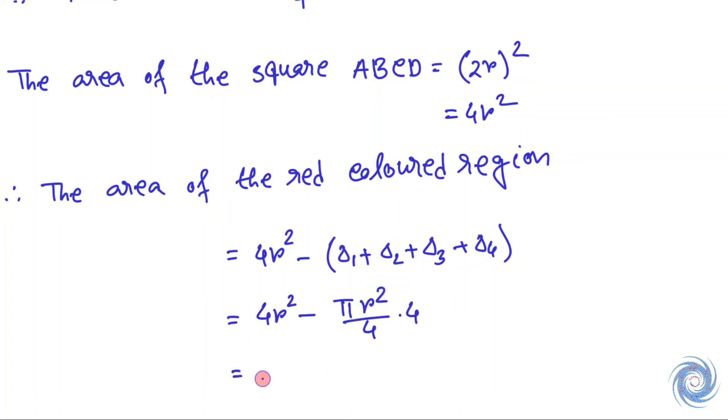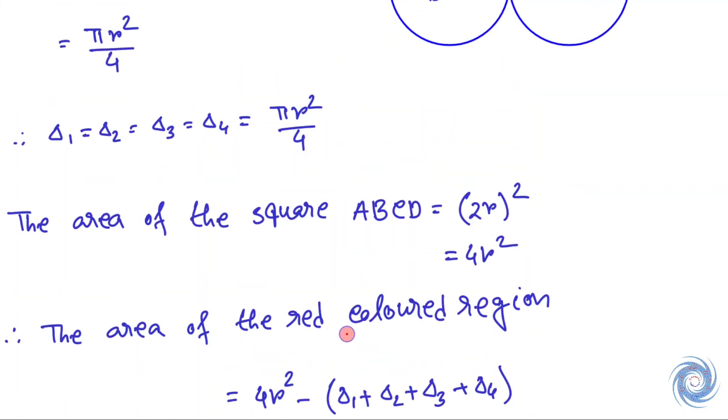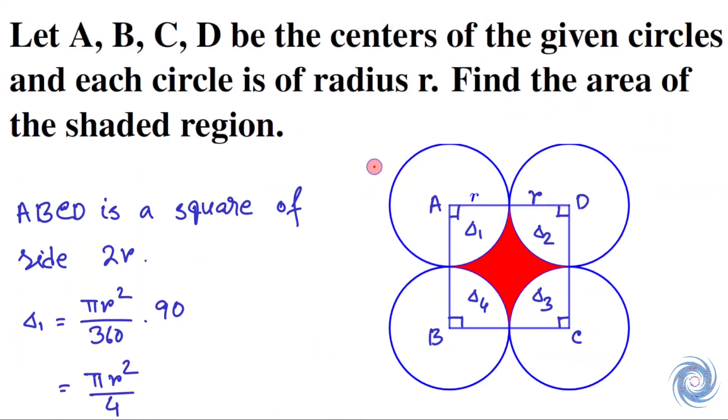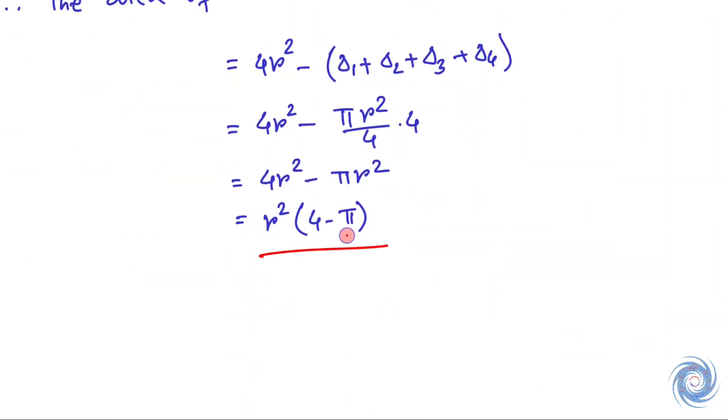And from here we have, and this quantity is obviously positive as 4 minus π is greater than 0. Therefore the area of the red colored region is r² times (4 minus π). And we are supposed to find the area of the shaded region, that means the red colored region, and here we have r² times (4 minus π).